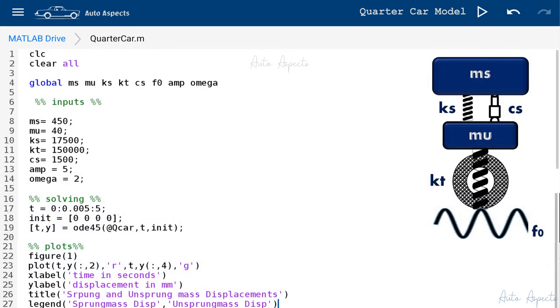Then finally we have the plotting command to plot the response of the system which we are interested in. Here we are focusing on the sprung and unsprung masses displacement. So you can run this program.